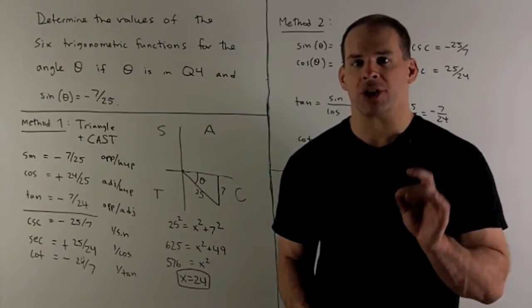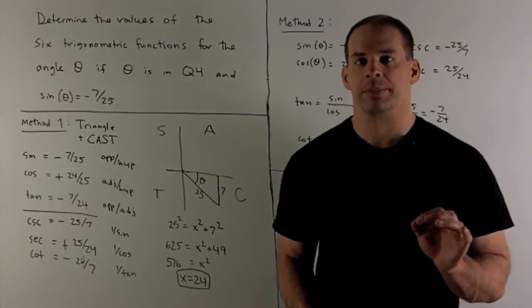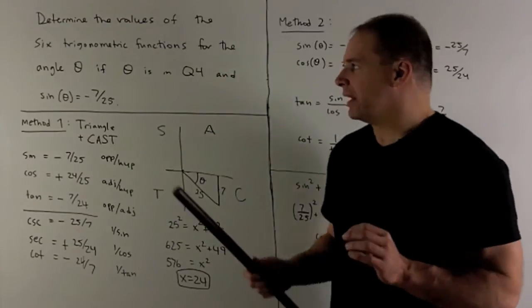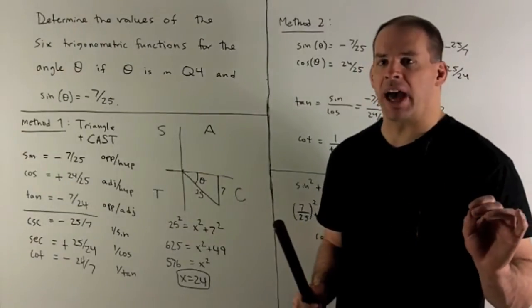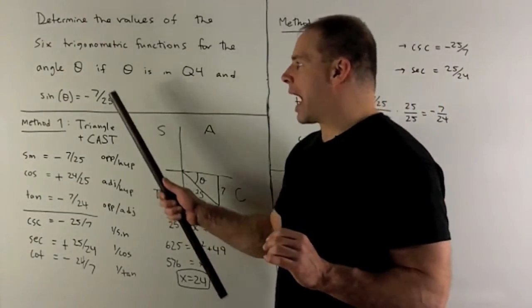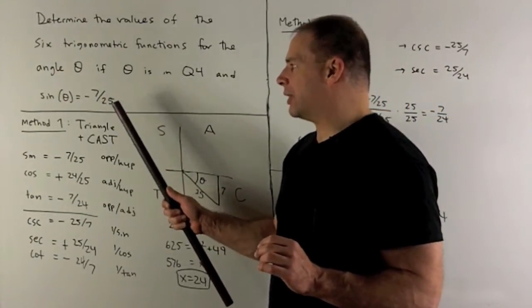First method, I use a right triangle and the CAST method. Now, I have sine of theta is minus 7 over 25, so we ignore the sign. That's going to mean our opposite is 7, hypotenuse is 25.